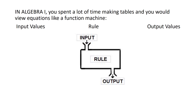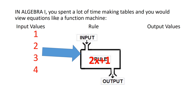In Algebra 1 you spent a lot of time making tables and viewing equations like a function machine. You would have some input values — most commonly starting at 1, counting up: 1, 2, 3, 4. We can pick our input values. Then we put them into the function machine or rule — let's say the rule is 2x plus 1. We plug the input in for x to get the output. If we plug 1 in for x, that's 2 times 1 which is 2, plus 1, which is 3.